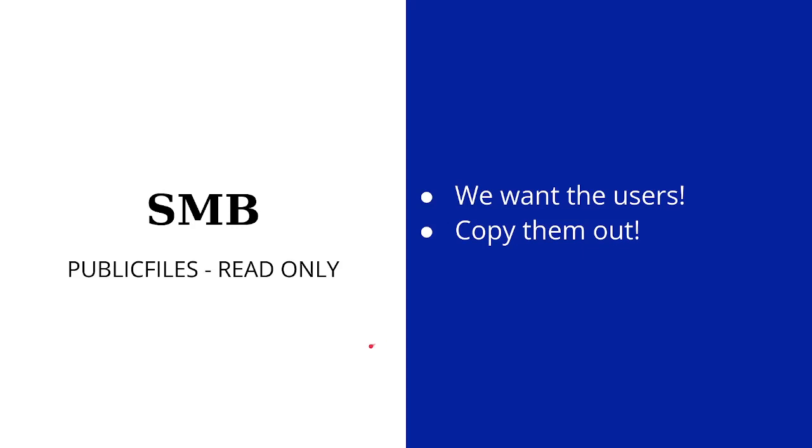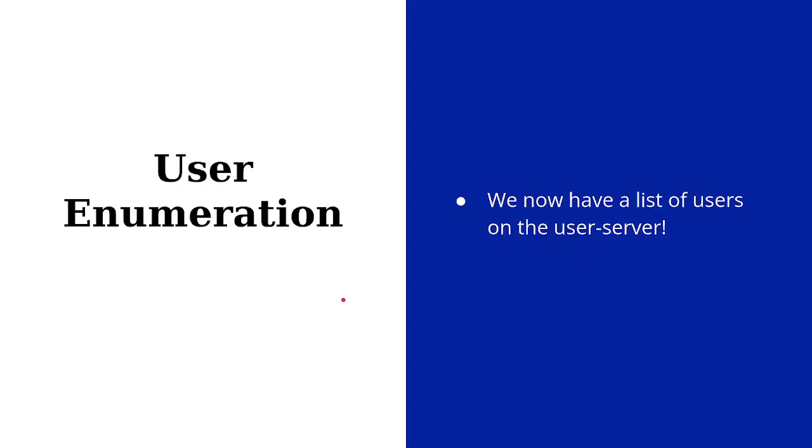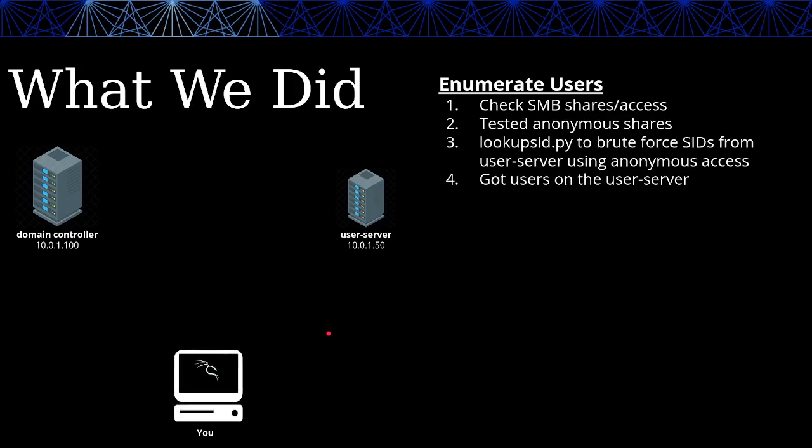The output shows SID type 'user' entries — those are user accounts on this machine. We can see: sshd, jeremy-admin, local-user, guest, and administrator. Copy these into your notes — these are all users that are going to be useful. I'm saving them into a file called accounts.txt, one per line. This is the first step in figuring out how to get into this Active Directory system.